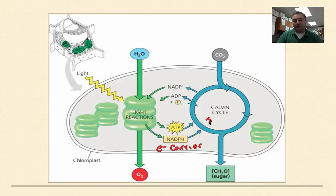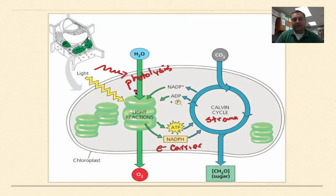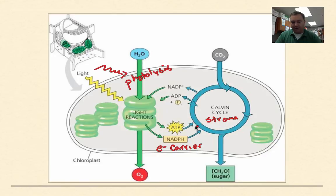NADPH and ATP move out into the stroma to power the Calvin cycle. To replace the electron lost from chlorophyll, light energy hits water in a process called photolysis, which replaces that electron and releases oxygen as a waste product. Meanwhile, in the stroma, CO2 from the atmosphere enters and goes through a series of reactions powered by ATP and NADPH to create sugar.